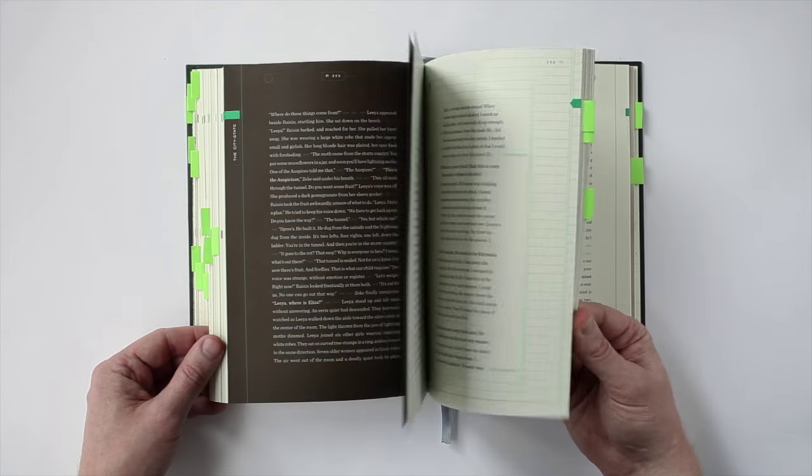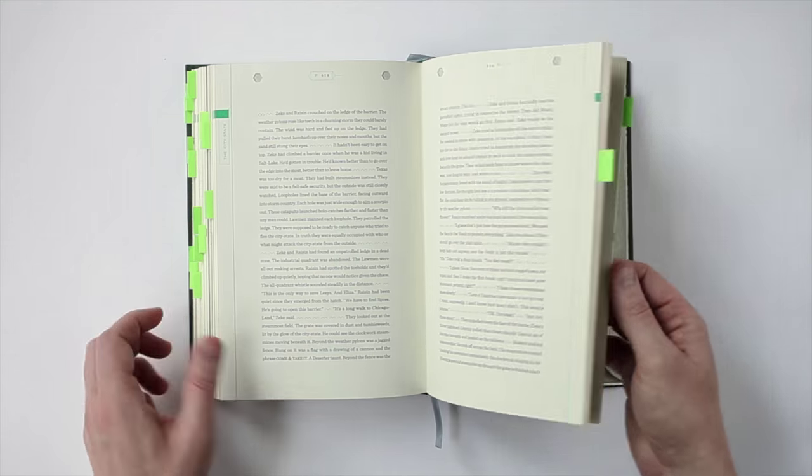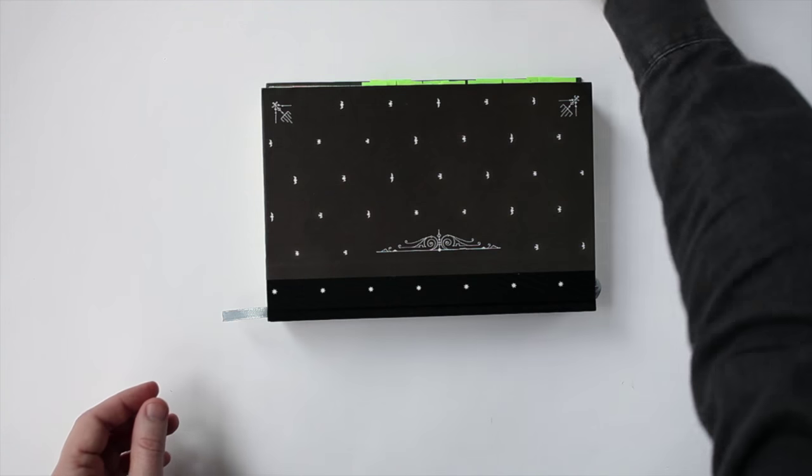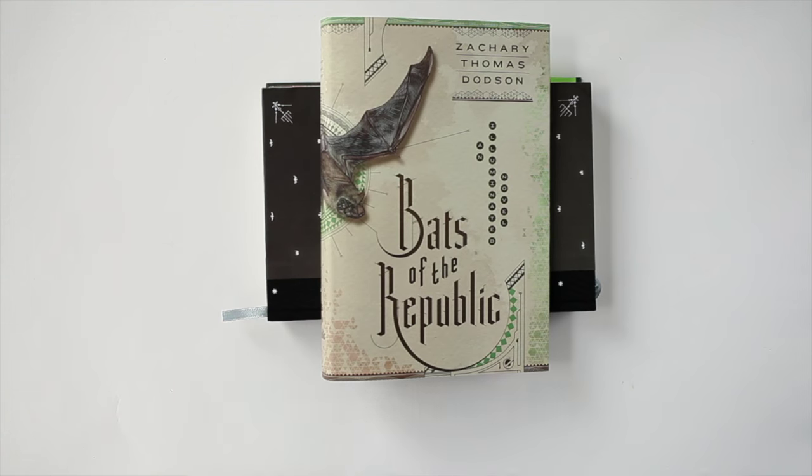There's a lot to look at along the way, but whatever you do, don't look inside the sealed envelope. On October 6th, you can buy Bats of the Republic wherever books are sold.